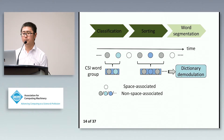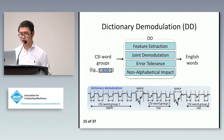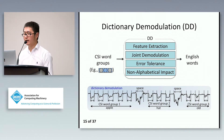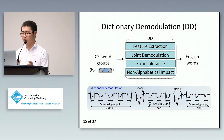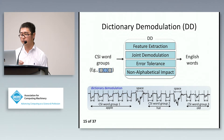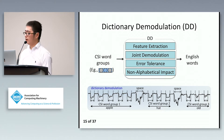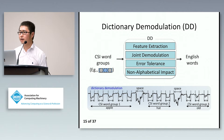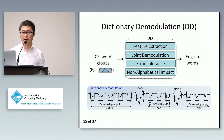Those CSI word groups will be the input of dictionary demodulation, which will convert them into corresponding English words. As shown in this figure, three CSI word groups can be directly demodulated into the words 'upper,' 'head,' and 'old.' Now I'll explain how to develop a feature to narrow down candidates and how to apply this feature and handle other situations.